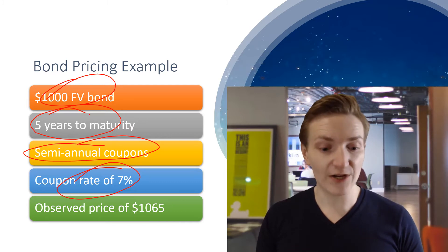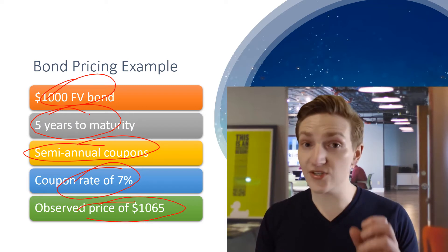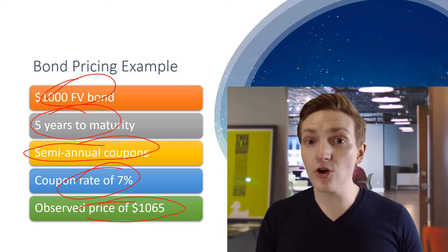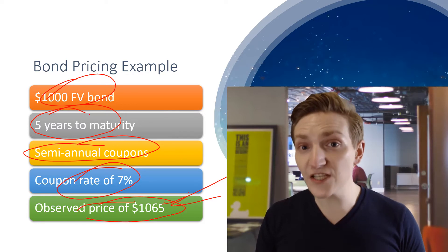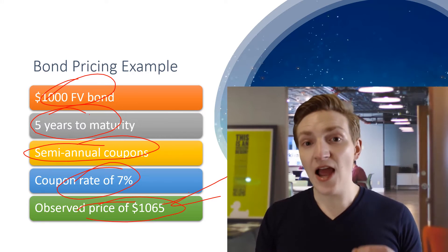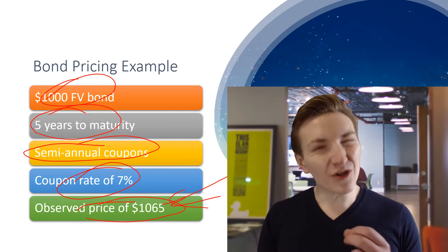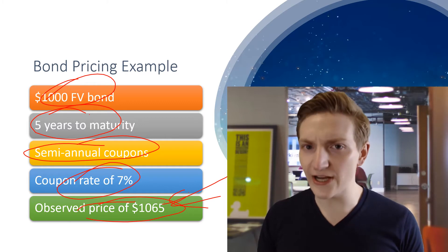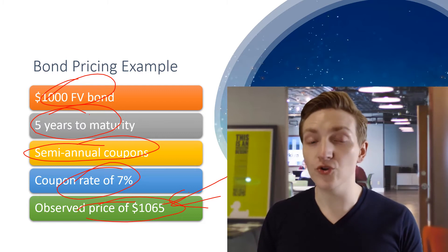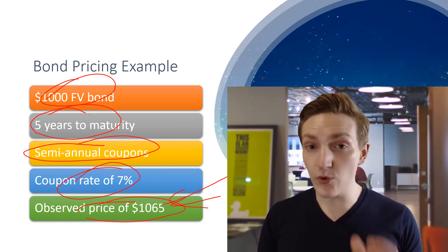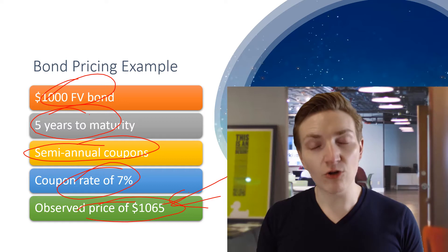Suppose our coupon rate is 7%, which implies $70 total coupons per year, or $35 per period given semiannual periodicity. Suppose the observed price for our bond is $1,065 — you just look at the market and see it's trading there. We're going to use this observed price to back out the yield to maturity, which is the discount rate that forces the present value of all future payments to equal $1,065 — somewhat analogous to an internal rate of return. Let's go into Excel and see how to do this.